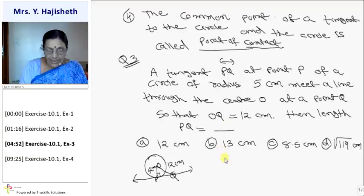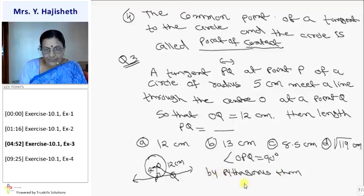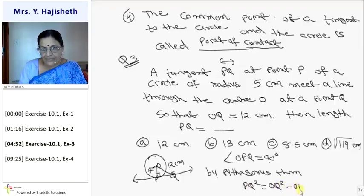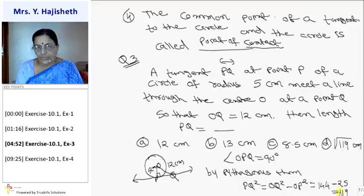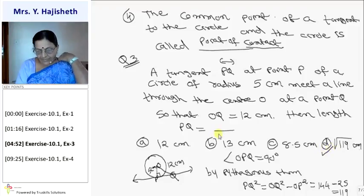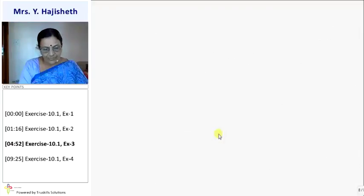Since angle OPQ is 90 degrees, by the Pythagoras theorem: PQ² = OQ² − OP² = 144 − 25 = 119. Therefore PQ = root 119 cm. The correct answer is D, root 119 cm. That completes sum number 3. There are only 4 questions in exercise 10.1.